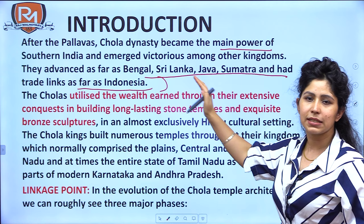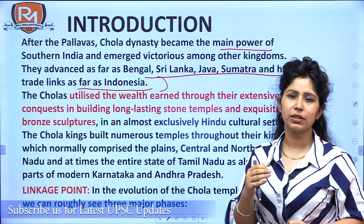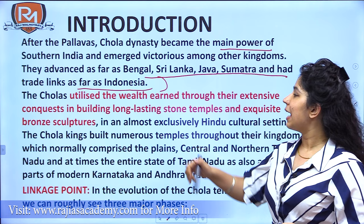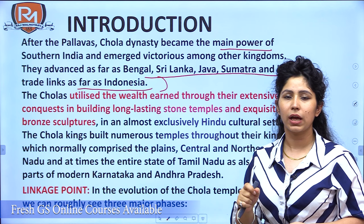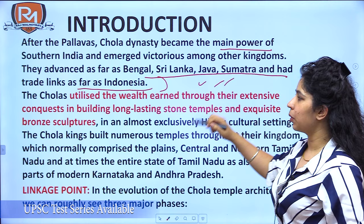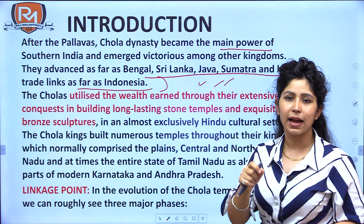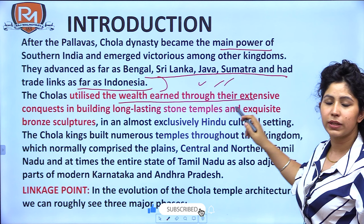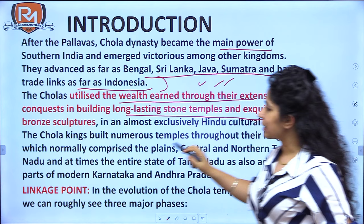From this line the examiner will understand the expanse of Chola rule, and that Chola sculptures, architecture, and art can be found in all these places. These places are very important to explain why Cholas had such wide art and architecture influence. The Cholas utilized the wealth earned through their extensive conquests in building long-lasting stone temples and exquisite bronze sculptures.